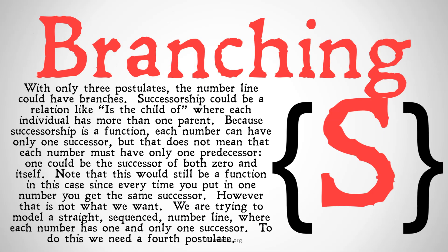With only three postulates, the number line could have branches. Successorship could be a relation like 'is the child of,' where each individual has more than one parent — each number could have multiple predecessors. Because successorship is a function, each number can have only one successor; if you input a number, you always get out the same other number. But that doesn't mean each number must have only one predecessor. One could be the successor of both zero and one itself.